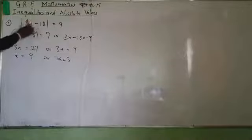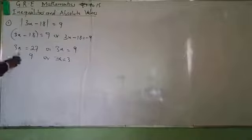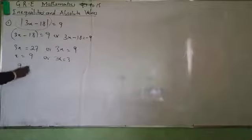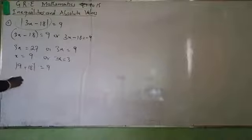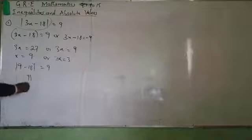We can test for the absolute value. If I test X equals 3: 3 times 3 minus 18 equals 9 minus 18, which is absolute value of minus 9. That negates out, giving 9 equals 9. First possible value is 3. For X equals 9: 27 minus 18 equals absolute value of 9, which is also 9. Both solutions check out.